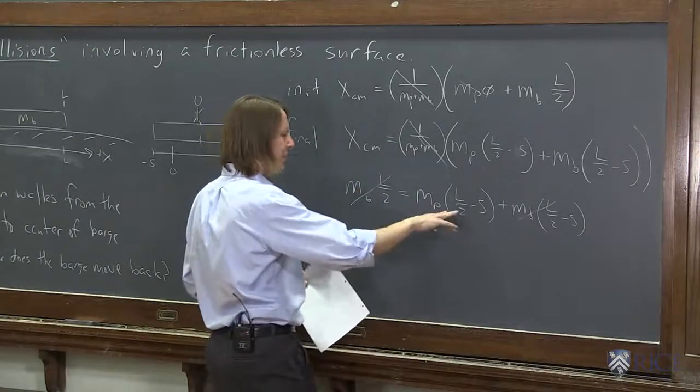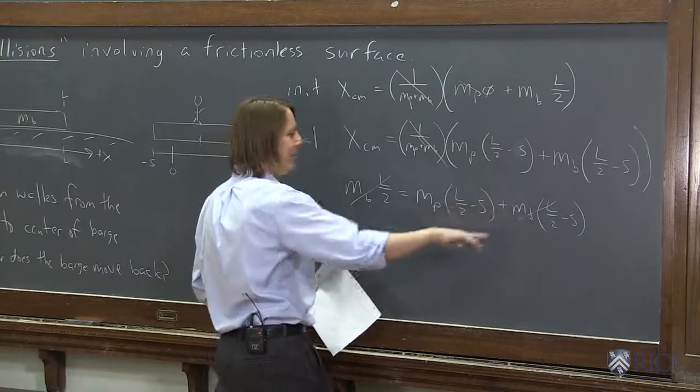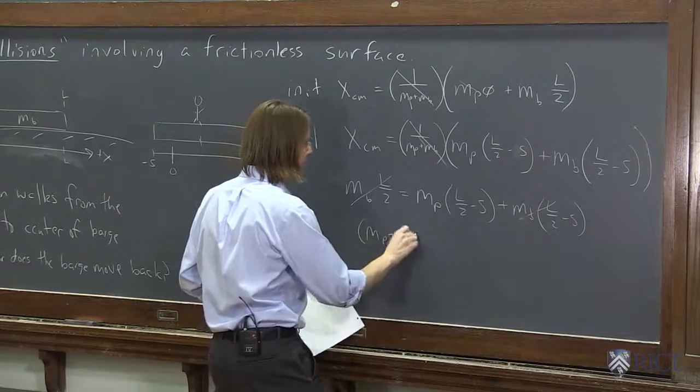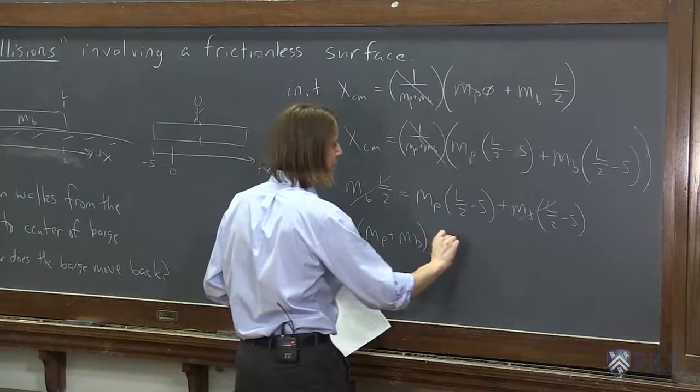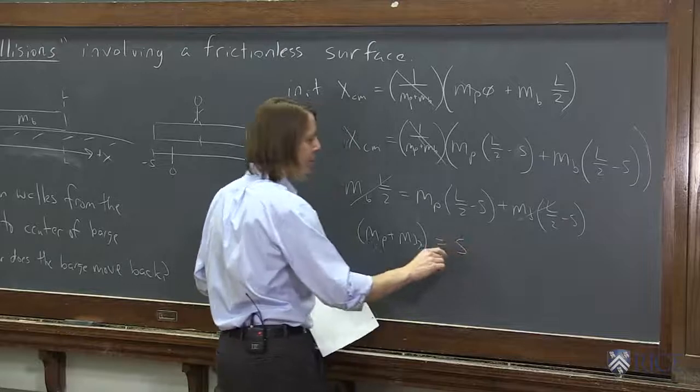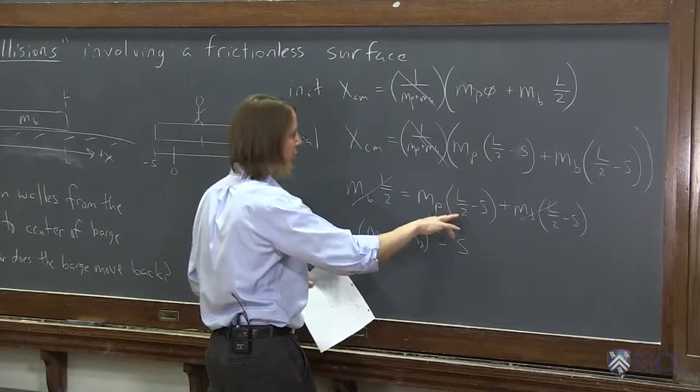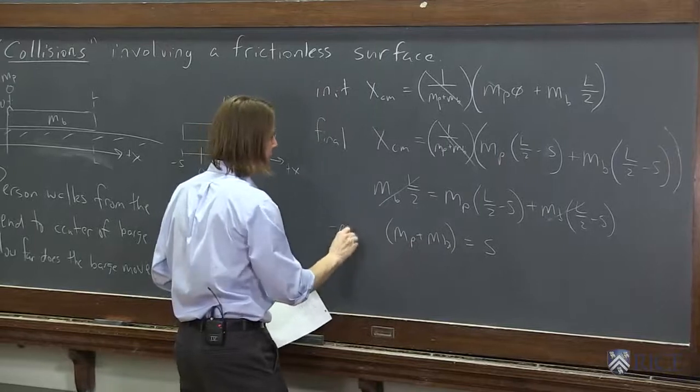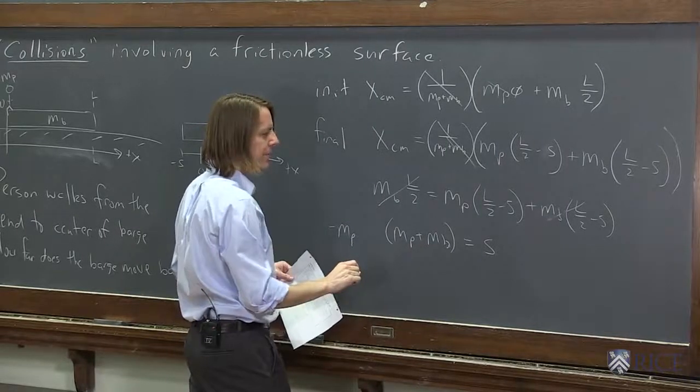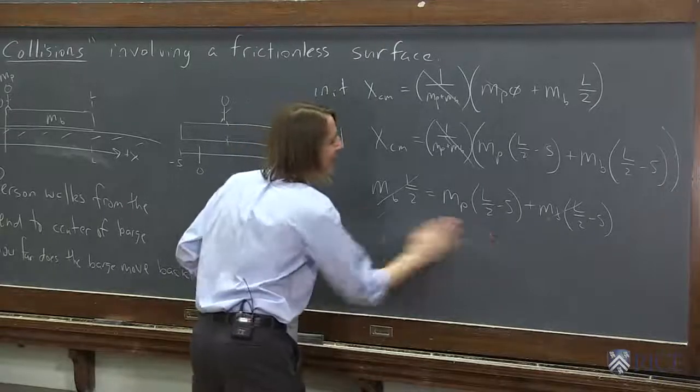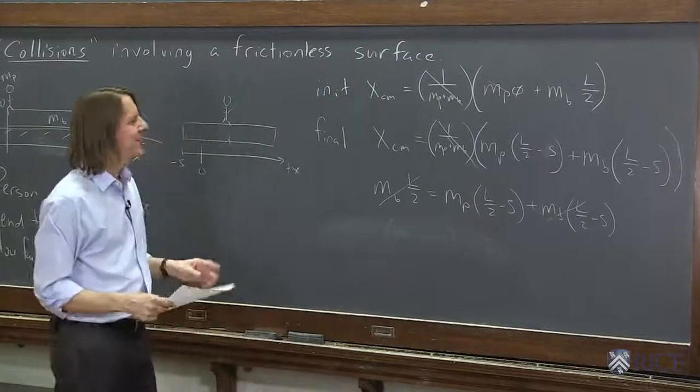And then we're down to just mp times l over 2 minus mp times s minus mb times s equals zero. So we could solve this. What are we solving for? We're solving for s. Okay, let's solve this for s. I've algebra'd myself here.